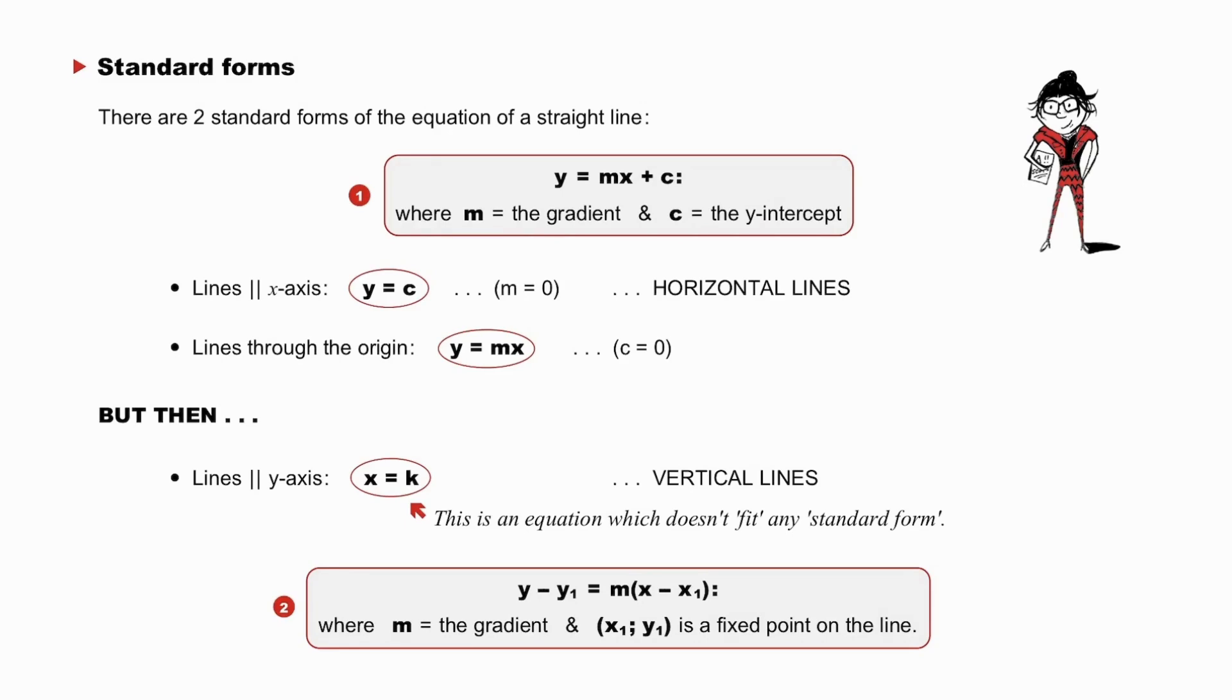But the variations are as important. Lines parallel to the x-axis, standard form y equals c. Lines through the origin, y equals mx. But then also, lines parallel to the y-axis, x equal to k. Vertical lines. And this is an equation, which doesn't fit any standard form.